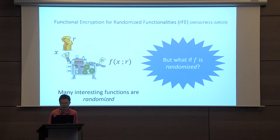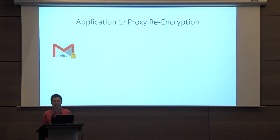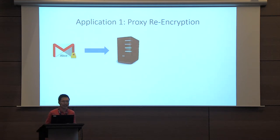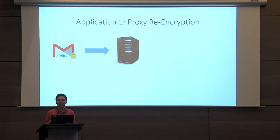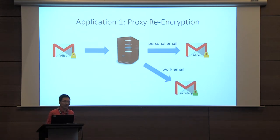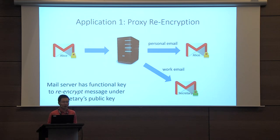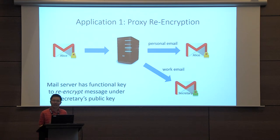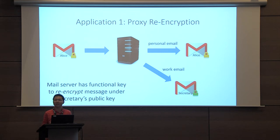Let me motivate this with two concrete examples. First, consider proxy re-encryption. Suppose Alice runs a mail server and goes on vacation. She wants to delegate a subset of her incoming emails — encrypted under a public key functional encryption scheme — to her secretary, provided they're tagged as work-related. If a personal email arrives, the proxy does nothing; if it's a work email, the proxy re-encrypts the contents under her secretary's key. Since public key encryption must be randomized to be semantically secure, solving this naturally requires functional encryption schemes that support randomized functionalities.